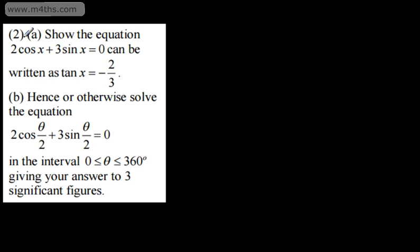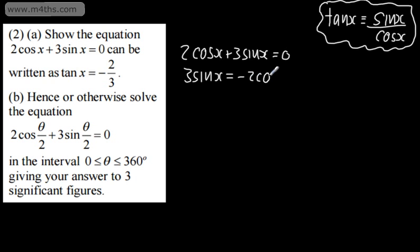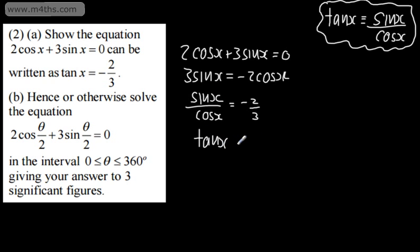Question 2, part A: show that the equation 2cosx + 3sinx = 0 can be written as tanx = -2/3. I'm going to write my identity to the examiner: tanx = sinx/cosx, as long as cosx ≠ 0, since division by zero is undefined. Starting with 2cosx + 3sinx = 0, subtracting 2cosx: 3sinx = -2cosx. Dividing both sides by 3 and by cosx: sinx/cosx = -2/3, so tanx = -2/3, as required.